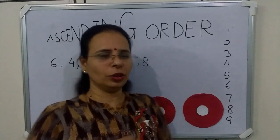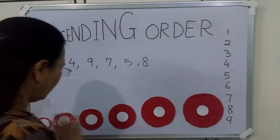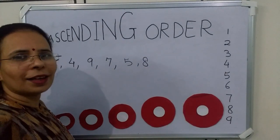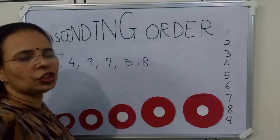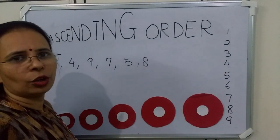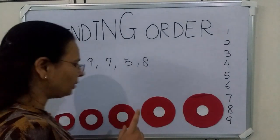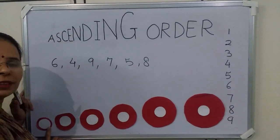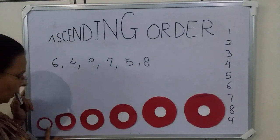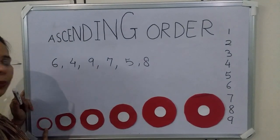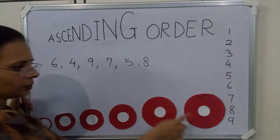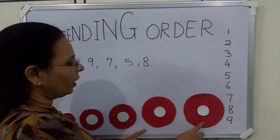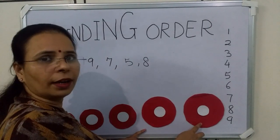You can see on the board there are some circles, and these circles are arranged in ascending order. You can see the circle which is smallest is at the beginning, and the circle which is biggest is at the end.